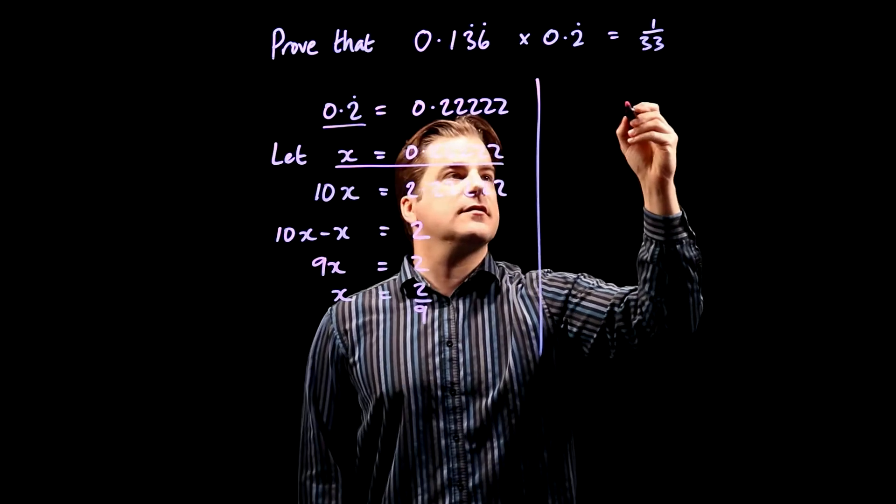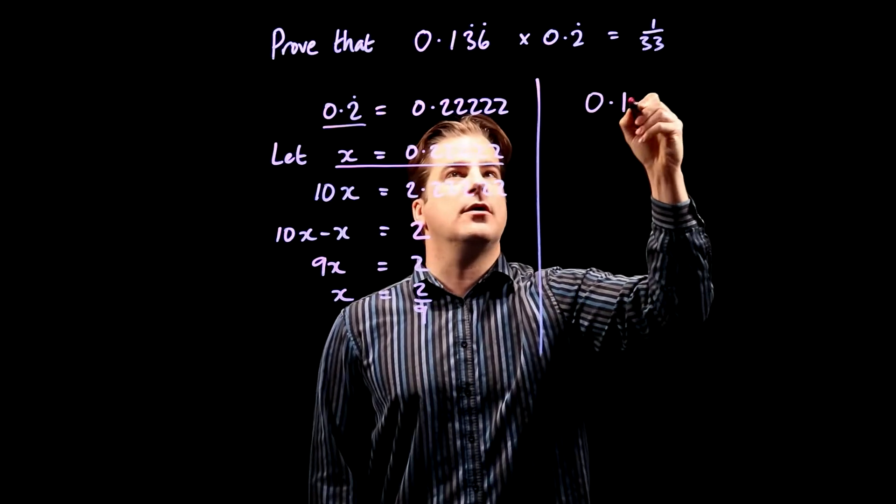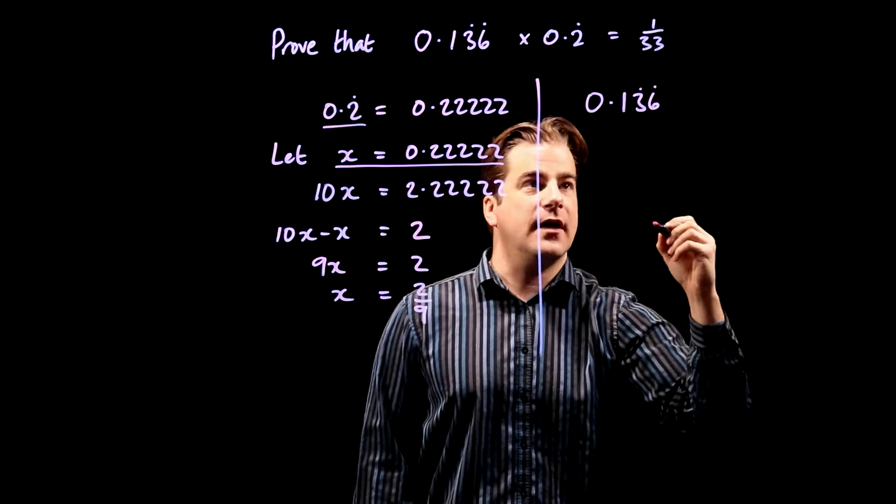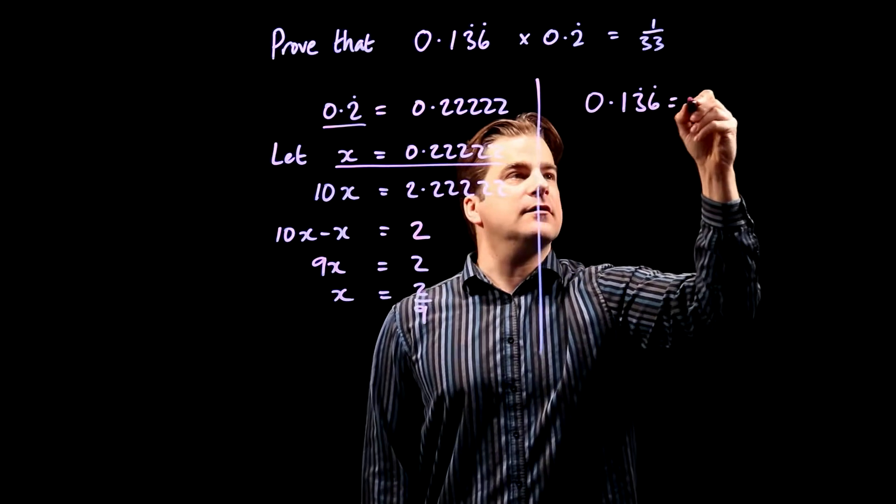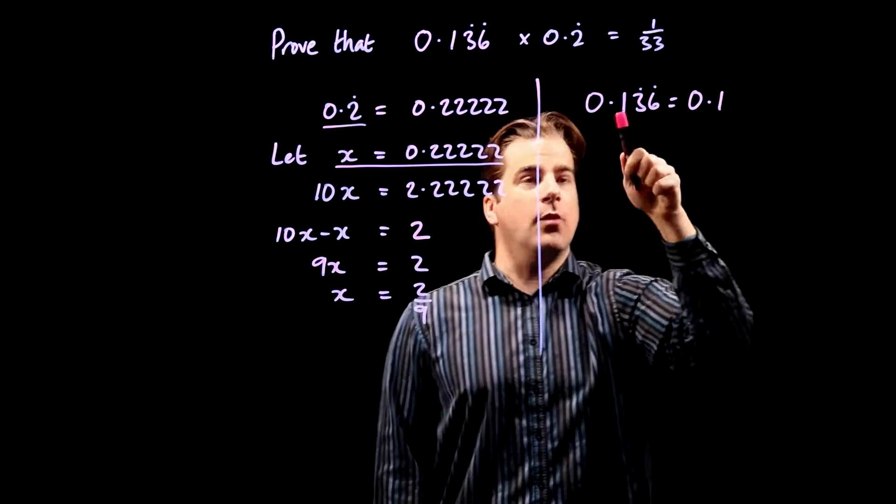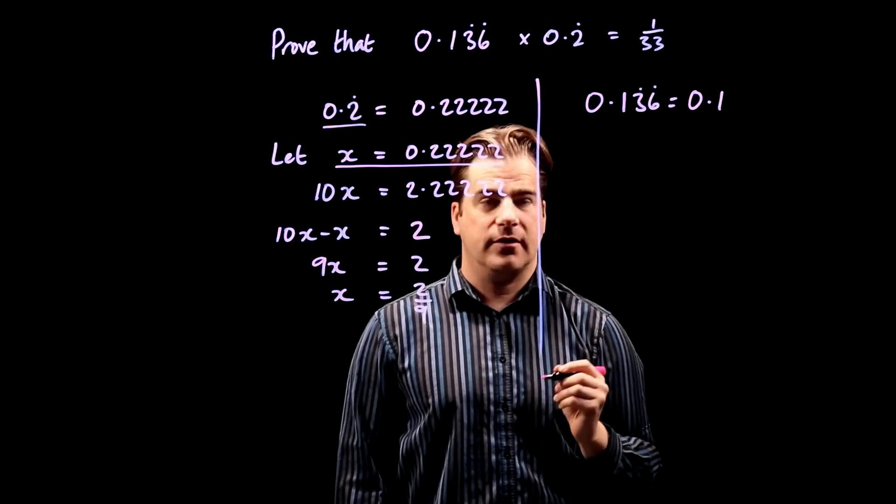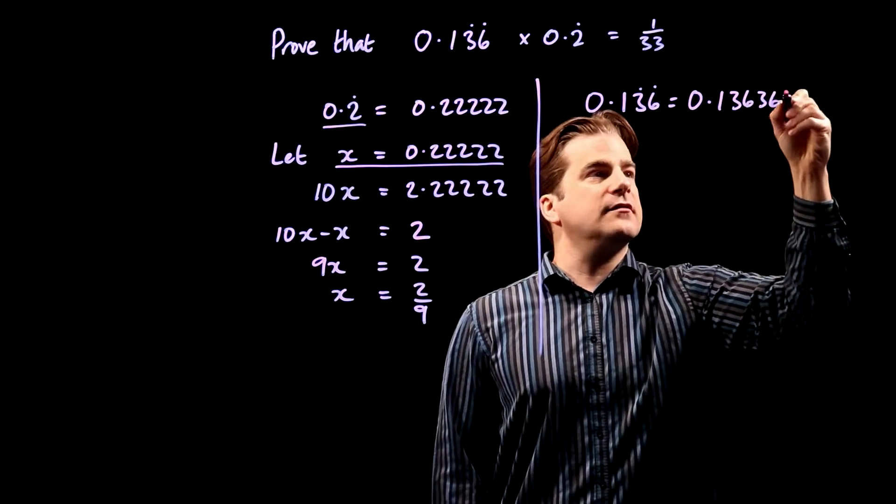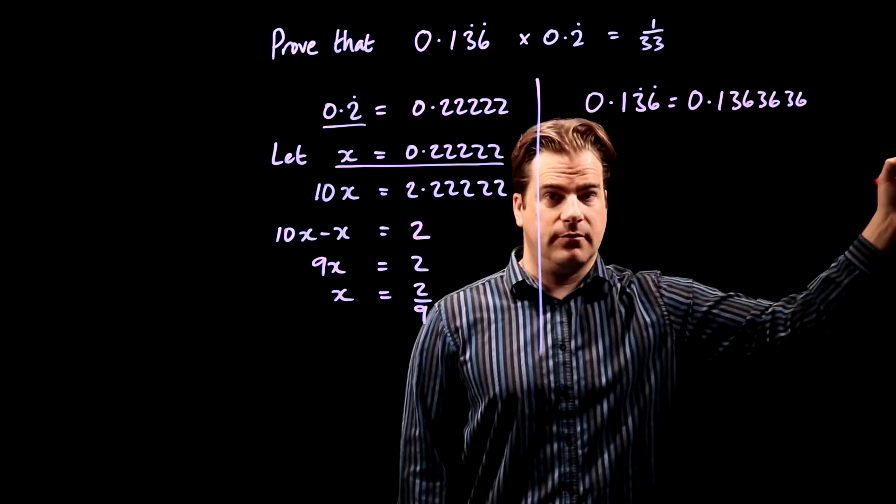So we've got 0.136 recurring. That means it's 0.1. The 1 doesn't repeat. There's no dot above it. It's 3, 6, 3, 6, 3, 6, and so on and so on.